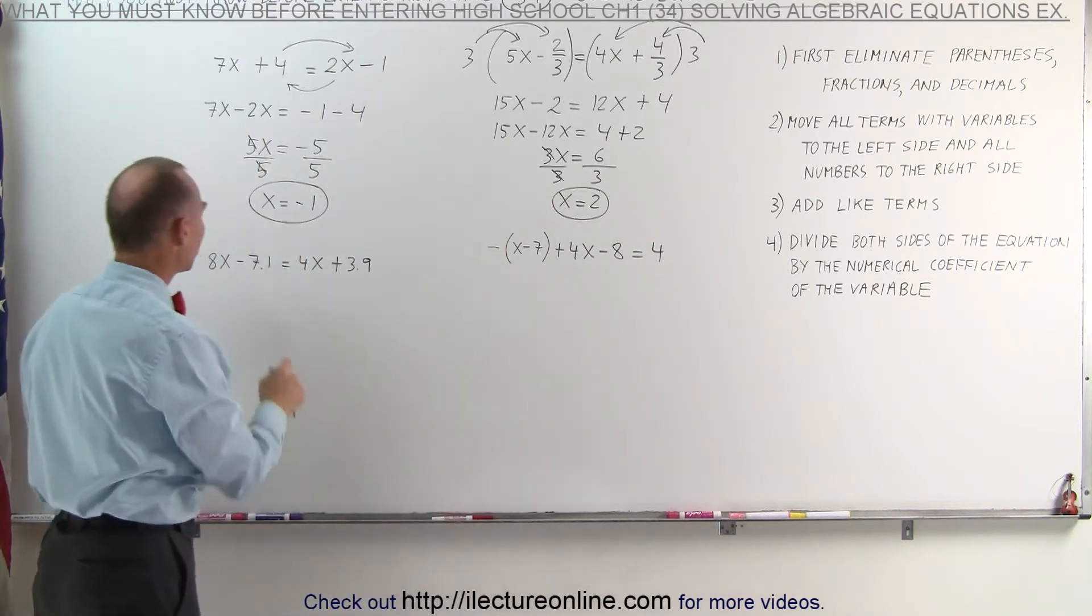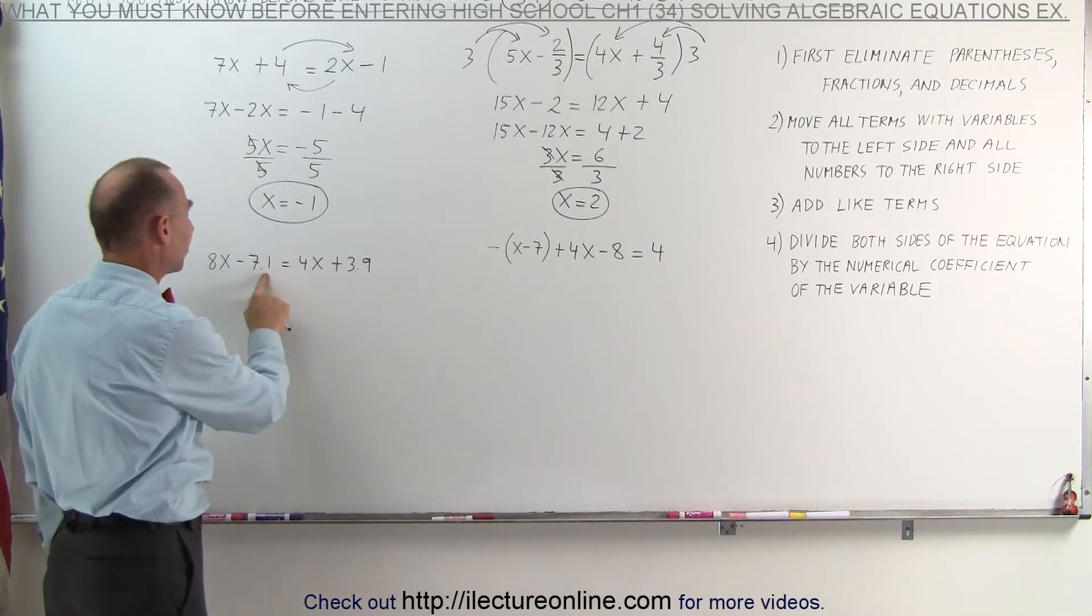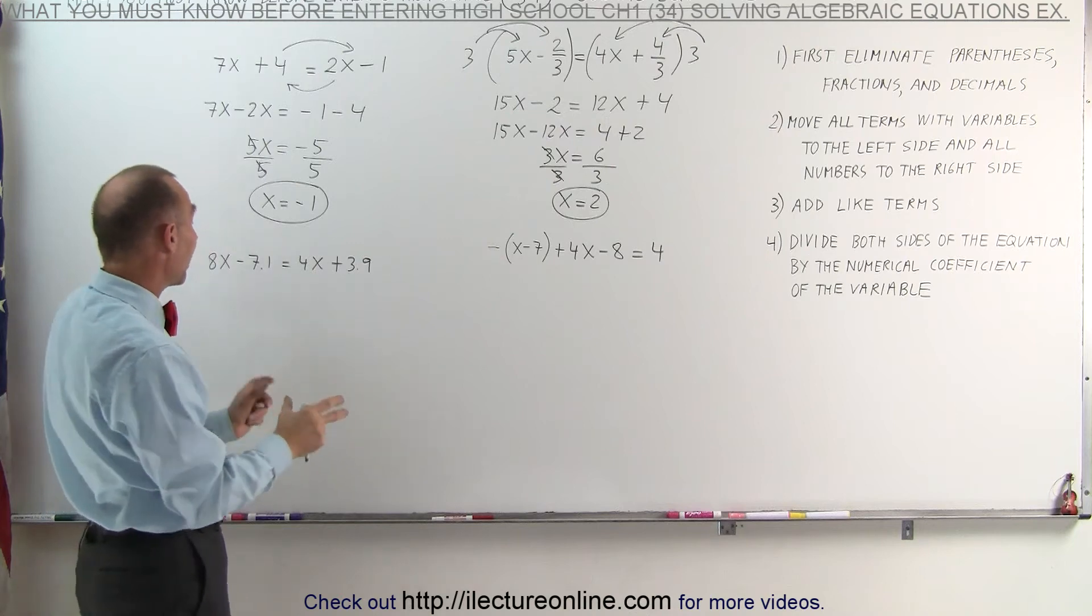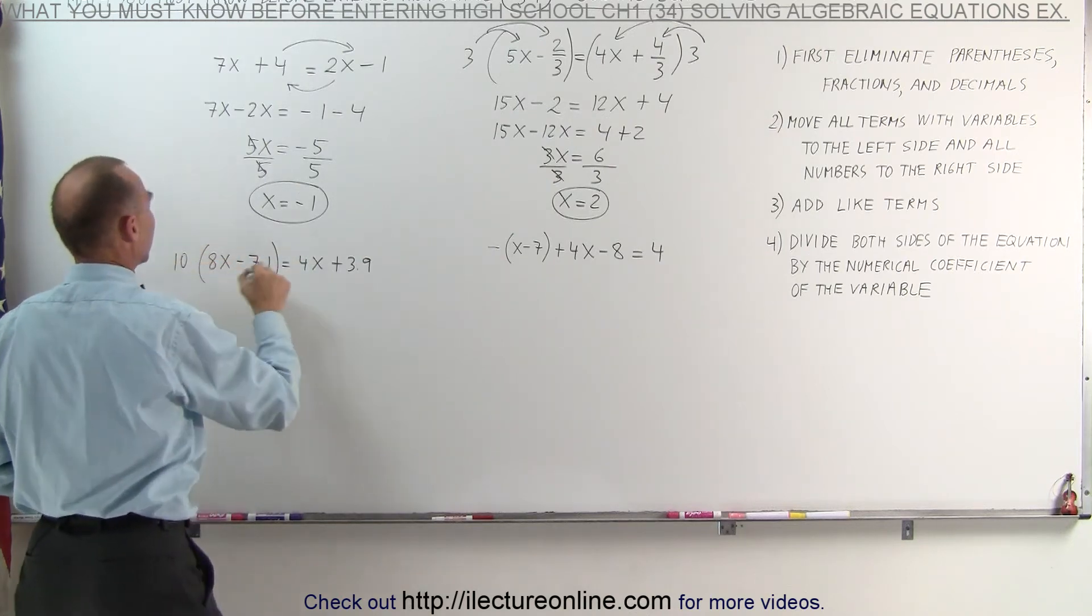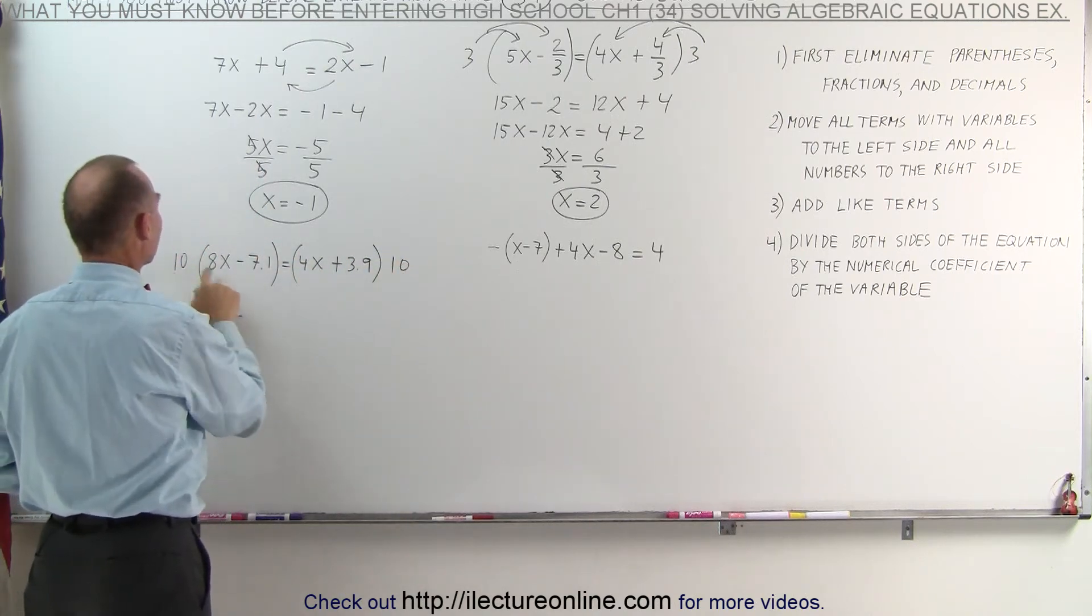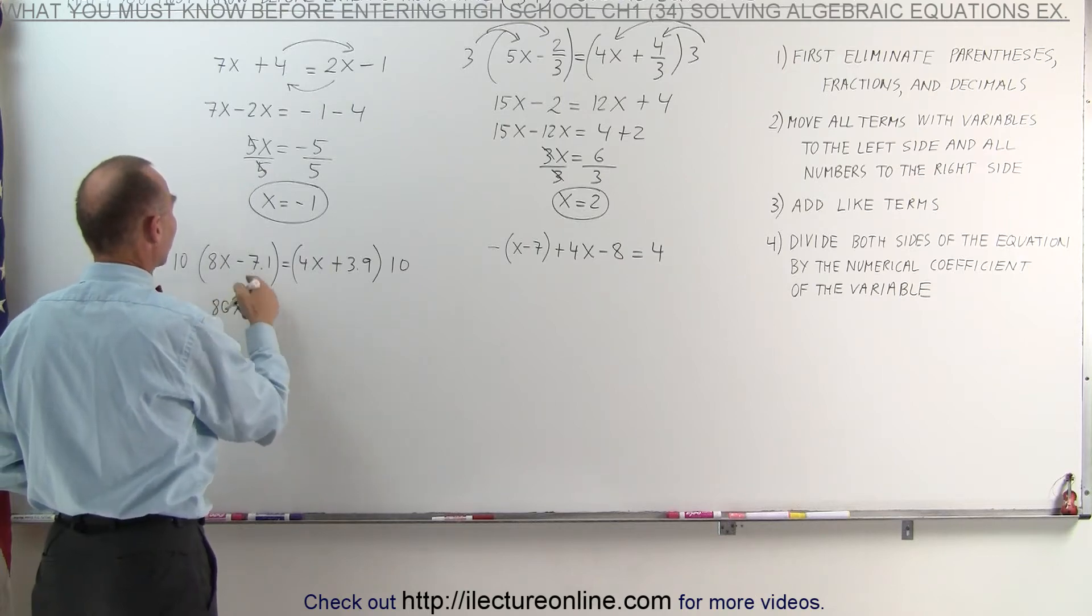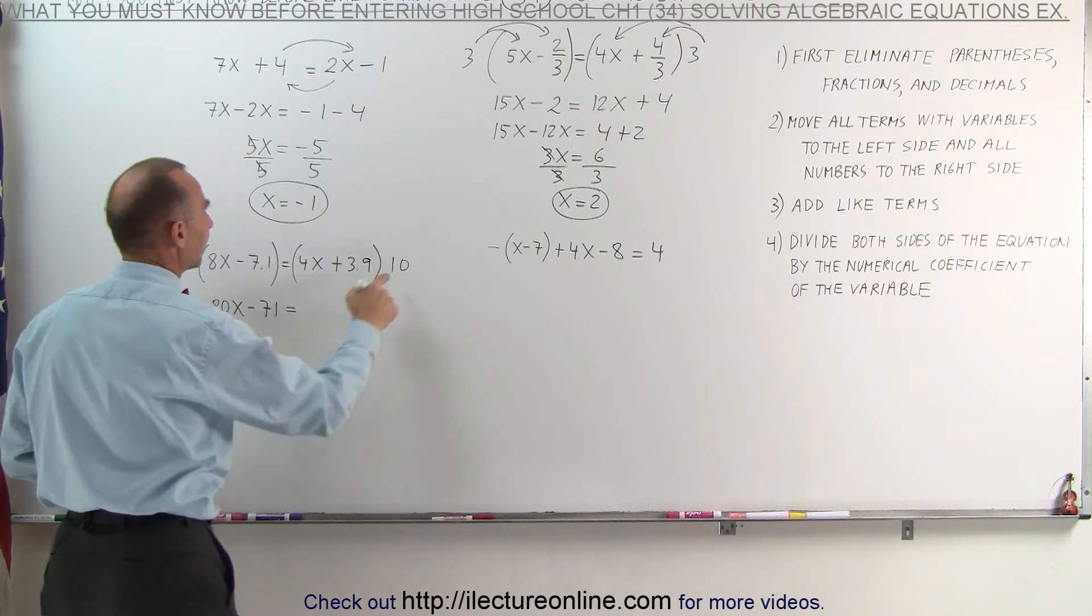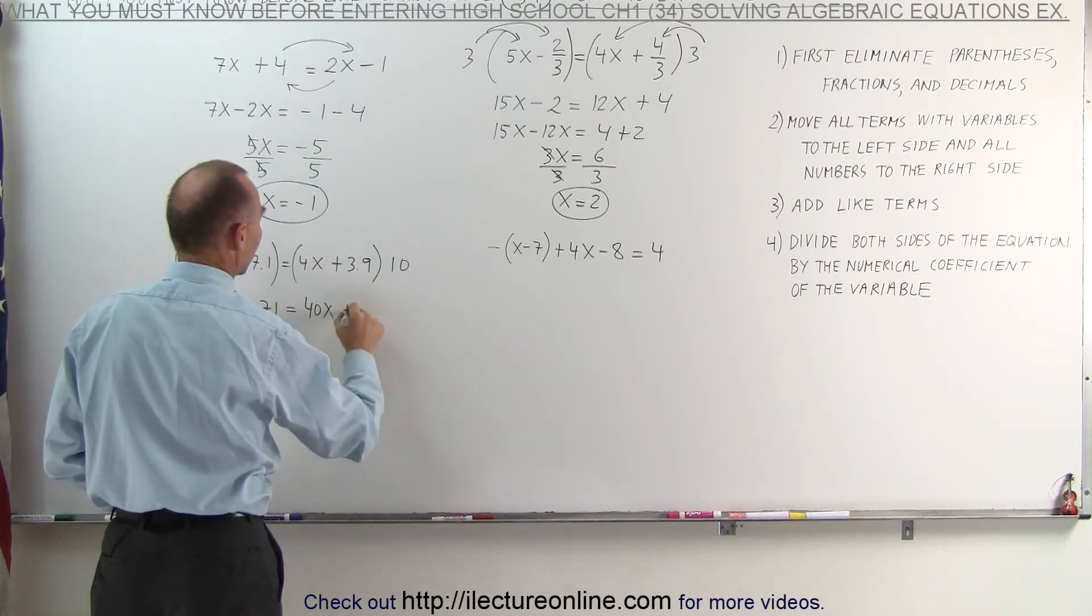On our third example, notice we have decimals. We want to get rid of the decimals. We have one decimal place here, one decimal place there, which means we need to multiply both sides of the equation by the number 10 to get rid of a single decimal place. The left side becomes 10 times 8x, which is 80x, and 10 times minus 7.1 is minus 71. Equals on the right side, 10 times 4x is 40x, and 10 times 3.9 is 39.